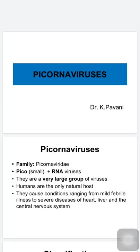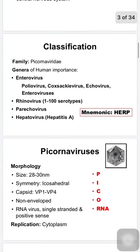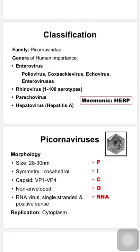Humans are the only natural hosts and they cause a variety of diseases ranging from simple common cold to paralysis, meningitis, hepatitis, etc. Looking into the classification, they belong to family Picornaviridae which includes 47 or more genera. The genera of human importance are enterovirus, rhinovirus, parechovirus, and hepatovirus. We can remember this with the mnemonic HERB: H for hepatovirus, E for enterovirus, R for rhinovirus, and P for parechovirus.